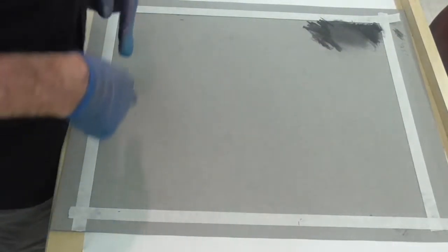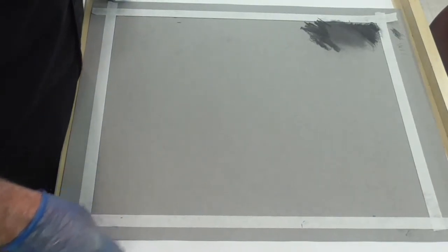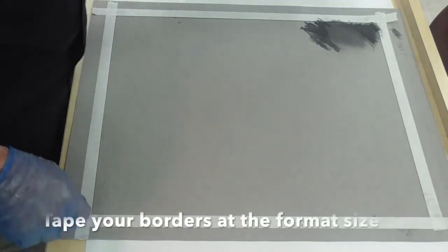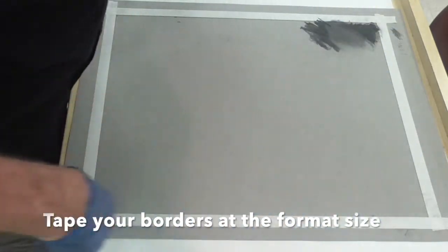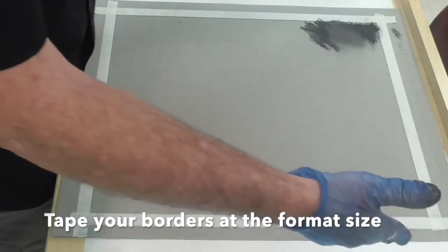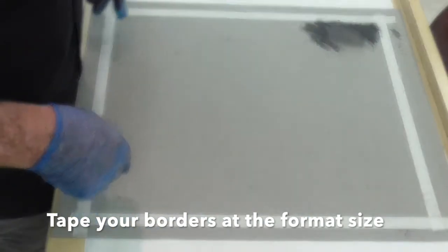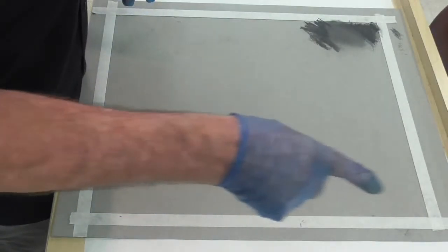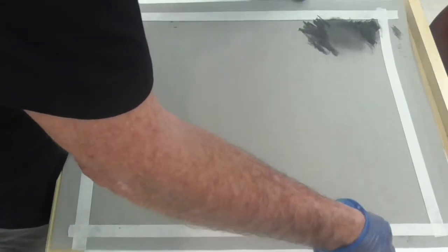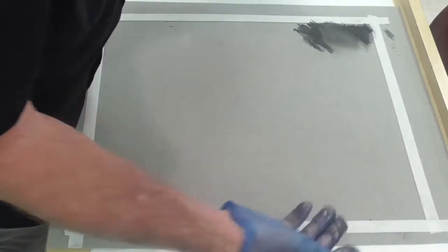After I put my tape around the edges of the Canson paper, which the tape is set at 15 by 18, I measured it out with a ruler just to make sure that it was the same size as my drawing.